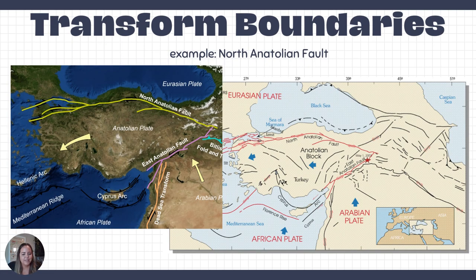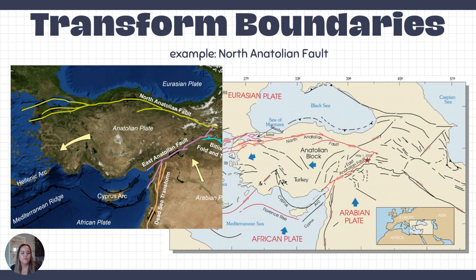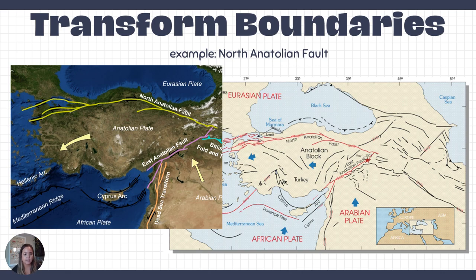California is not unique — transform boundaries also occur in Turkey along the North Anatolian Fault. This made national news when a 7.6 to 7.8 magnitude earthquake struck. Turkey is not as well prepared as California or Japan for an earthquake of that magnitude — their infrastructure is not as sound, and engineers were not equipped to handle what that size earthquake would do to buildings. There was a lot of devastation, showing how intense plate tectonic fault motions can be.